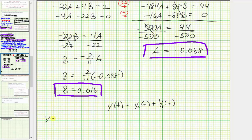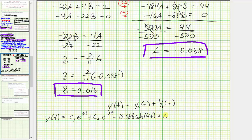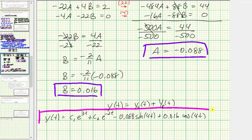So the general solution is y of t equals c sub one times e raised to the power of three t, plus c sub two times e raised to the power of negative two t — this is the complementary function — plus the particular solution: minus 0.088 sine four t plus 0.016 cosine four t. This question doesn't ask for the general solution, but yours might. I hope you found this helpful. Thank you.